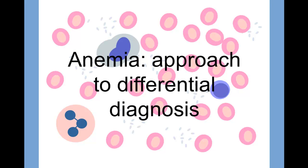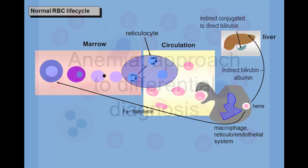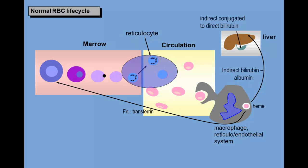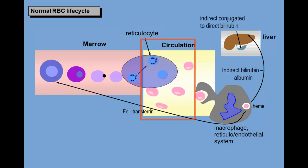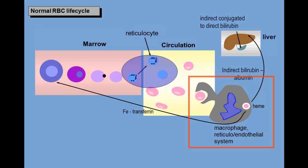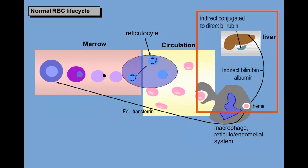In this video, we develop an approach to the differential diagnosis of anemia. In other videos, we reviewed the red cell life cycle, emphasizing the maturation from erythroblast to reticulocyte, the 120-day lifespan in the circulation, the removal of old red cells by macrophages in the reticuloendothelial system, and the catabolism of heme to bilirubin.